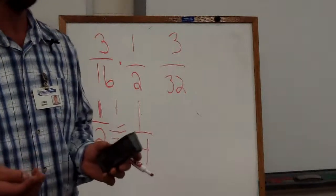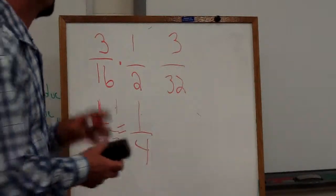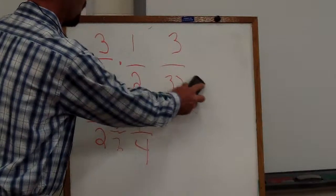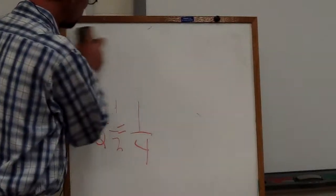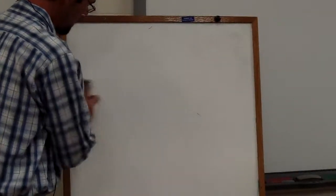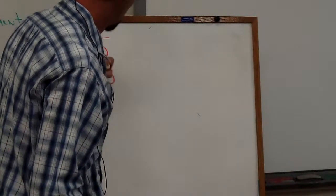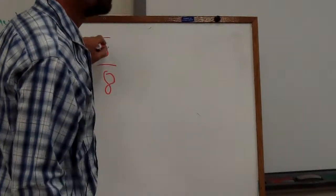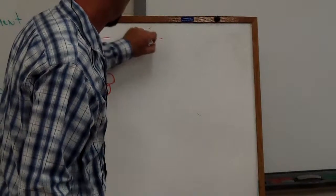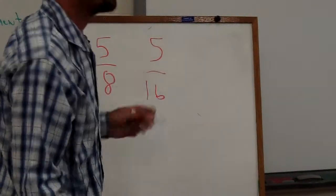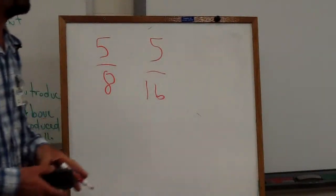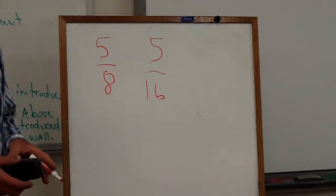But there's a real easy trick too, to doing these where you don't even have to multiply that. All it is, and it doesn't matter what the fraction is, if it's five eighths, top number stays the same, bottom number doubles, always. It's the same thing as multiplying it by half. Does everybody got that? Pretty simple.